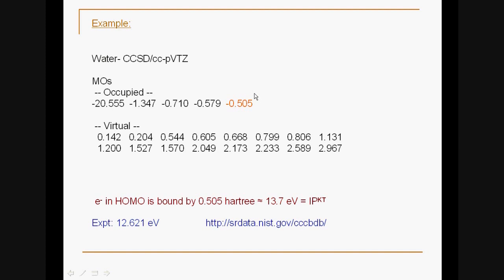If I apply Koopmans' theorem to this case, I obtain ionization potential 0.505 hartrees, which means the electron is bound by this much. I know it's bound because the energy is negative. Converting this energy from hartrees to eV, which makes more sense for physical chemists, I obtain 13.7 electron volts. This would be the ionization potential at Koopmans' theorem level. If we compare it with experiment from this database, we can see this is a reasonable number. It's a little bit higher than expected, but we know the reason for that from the previous slide.